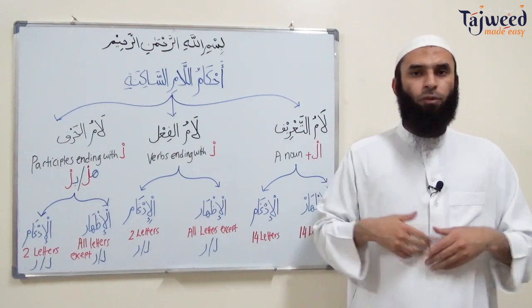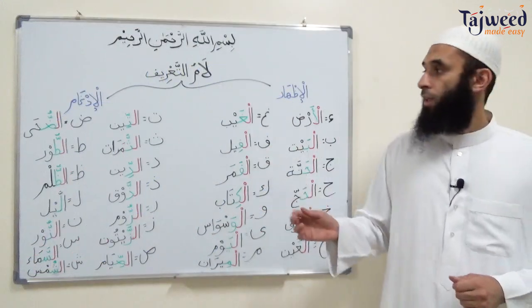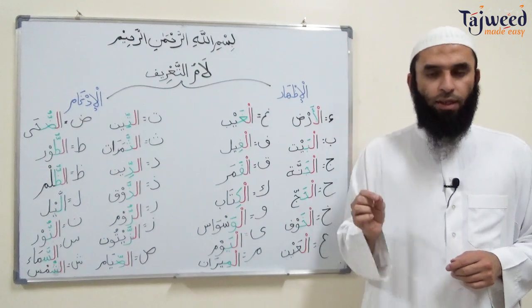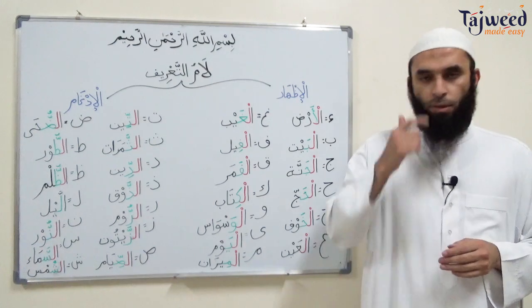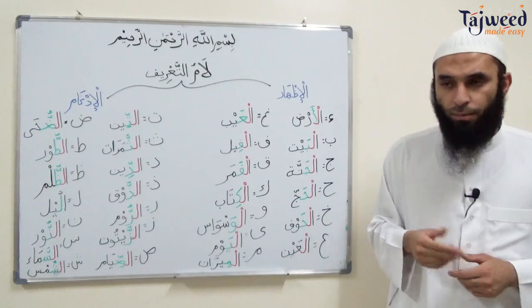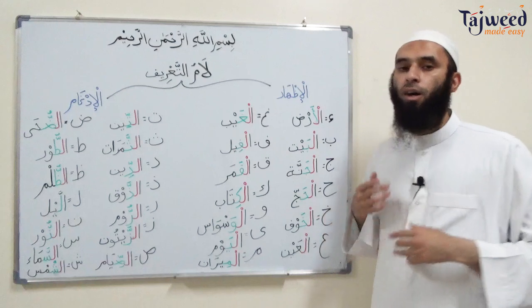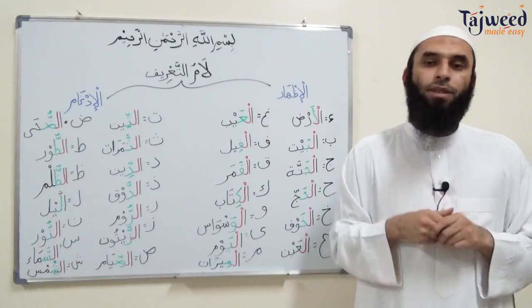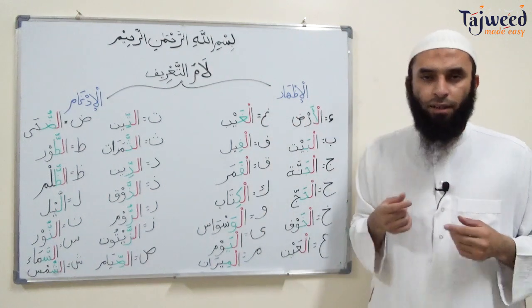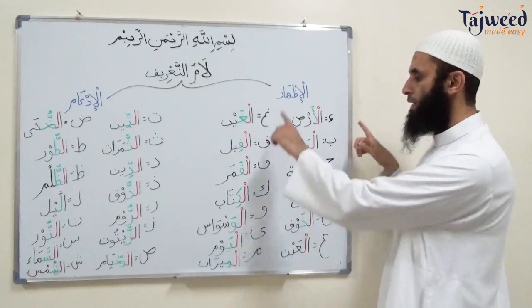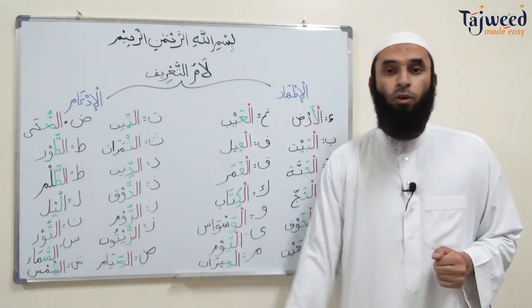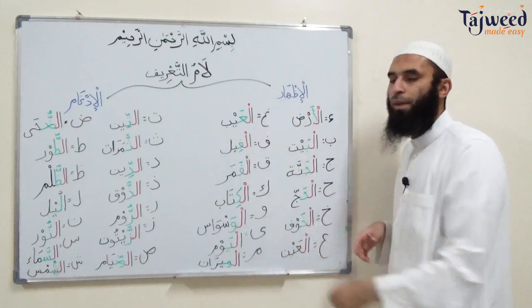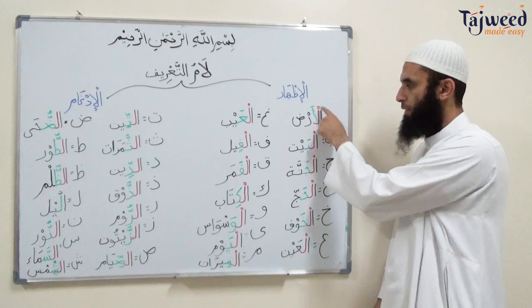Now we're going to do examples of لام التعريف in more detail. لام التعريف is the اللام الساكنة preceded by an alif, placed in the beginning of the noun to make it definite. When the Arabs used this, 14 letters caused الإظهار - the لام was pronounced clearly. These are called حروف القمرية (the moon letters), and this لام is called لام القمرية. The first of the 14 moon letters is همزة.